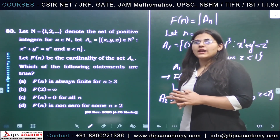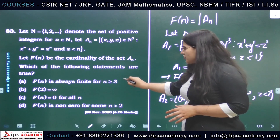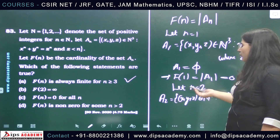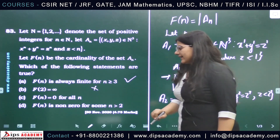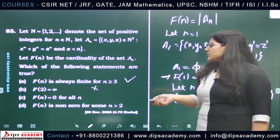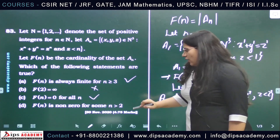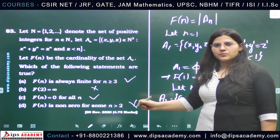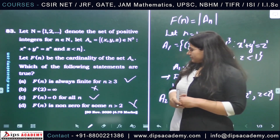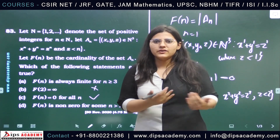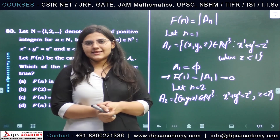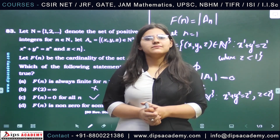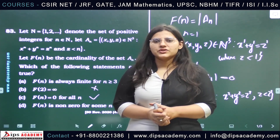Since f(n) = 0 for all n, it is certainly finite for n ≥ 3, so option A is correct. Option B states that f(2) is infinity, which is wrong since A_2 is empty. Option C states that f(n) = 0 for all n, which is true. Option D states that f(n) is non-zero — since C is true, D cannot be true. So options A and C are correct. This question just relies on knowing Fermat's Last Theorem; if you know that result, you can solve it easily. Thank you for watching.